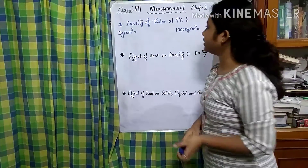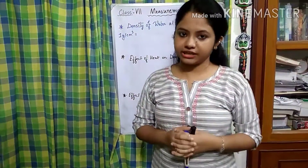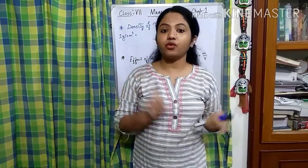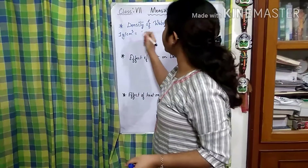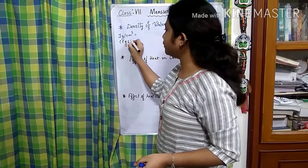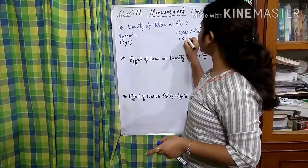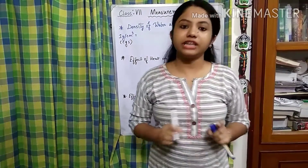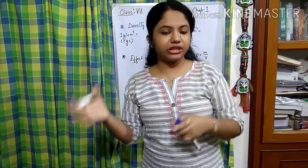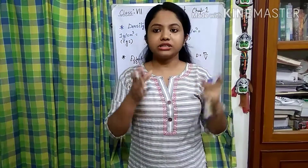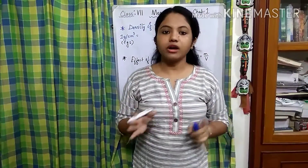Let's get started with the first one, where you can see the density of water. What is the density of water at 4 degree centigrade? The density of water at 4 degree centigrade, when it comes to the CGS system — we have already known about what is CGS and SI system — in case of CGS system, that is 1 gram per centimeter cube.